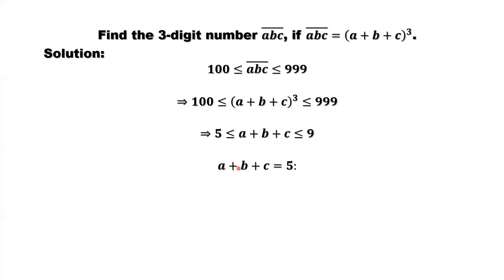If A plus B plus C equals 5, then 5 to the power 3 is 125. 125 is a three-digit number. Is this the answer for ABC? If this is ABC, then the right-hand side should be sum of its digits: 1 plus 2 plus 5 to the power 3. 1 plus 2 plus 5 is 8, and 8 to the power 3 is not same as 5 to the power 3. This implies 125 is not the answer.